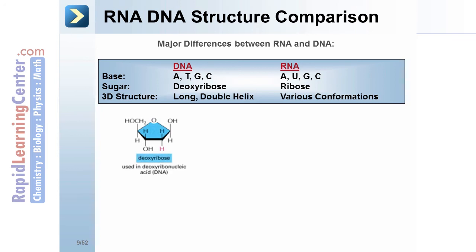Deoxyribose is used in DNA. Notice on the ribose the pink hydrogen. This is missing in ribose. In ribose it's an OH or a hydroxyl group.